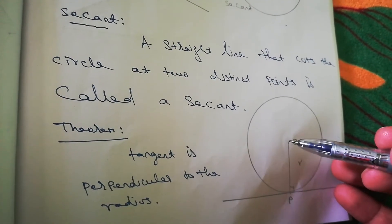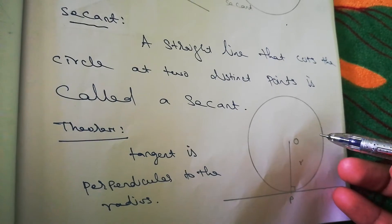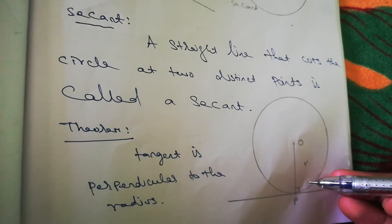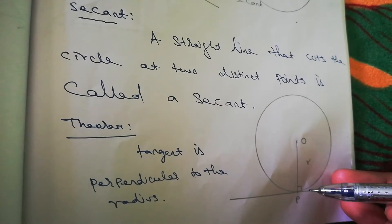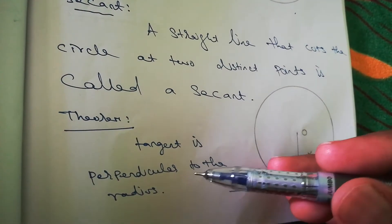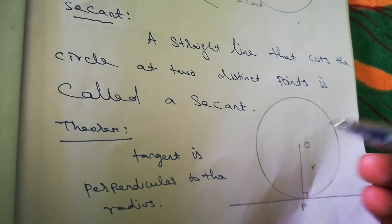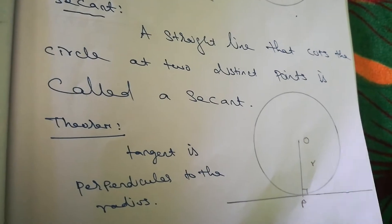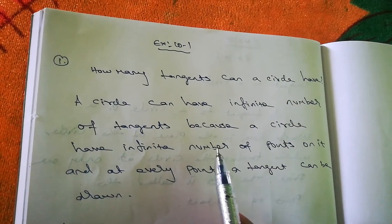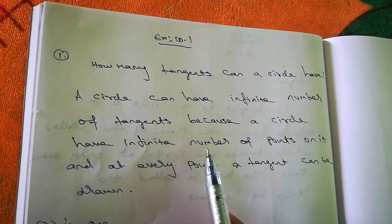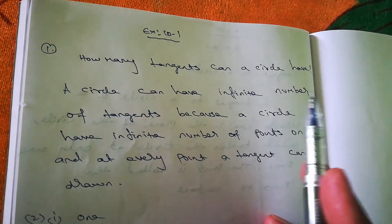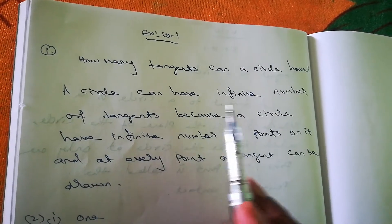If you draw a radius to a point and then draw a tangent at that point, the tangent will be perpendicular to the radius — this forms a 90-degree angle. So the tangent is always perpendicular to the radius. Now Exercise 10.1: the first question — how many tangents can a circle have?